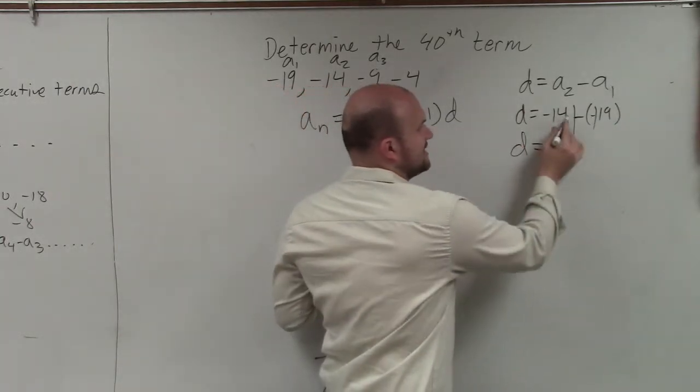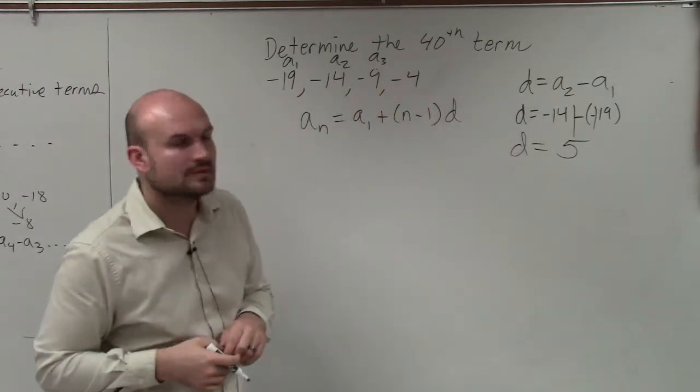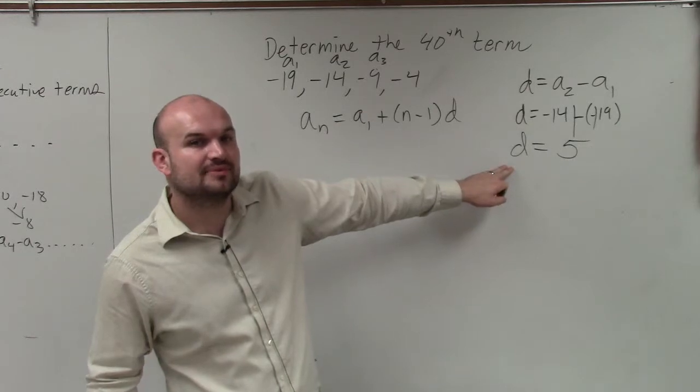So d equals negative 14 plus 19 is going to be a positive 5. So our d is going to equal 5. Sinan, please.